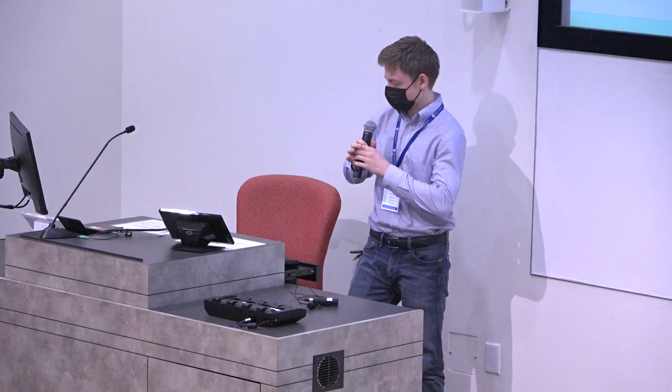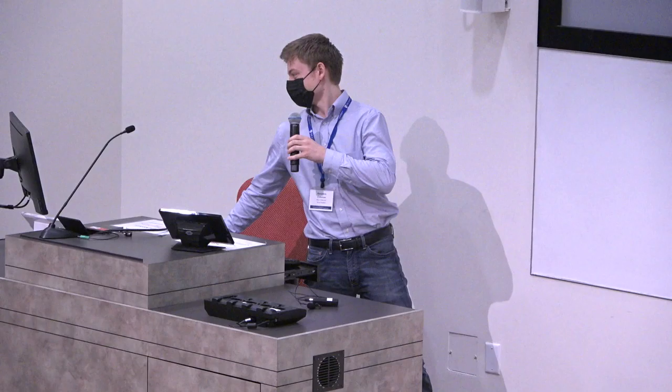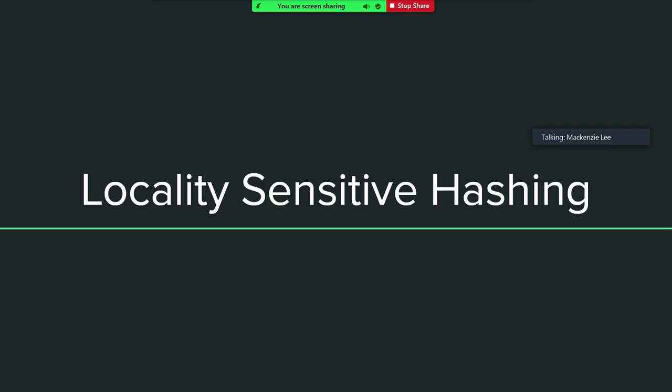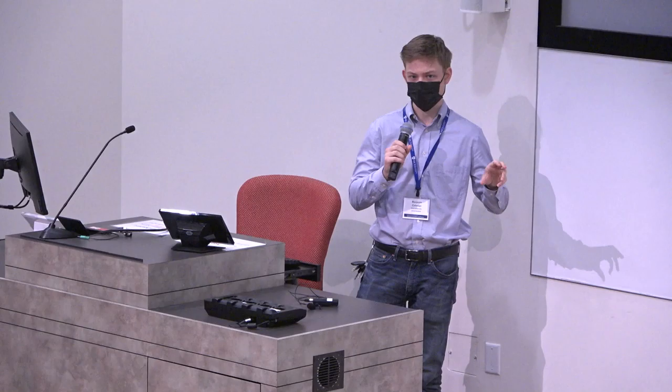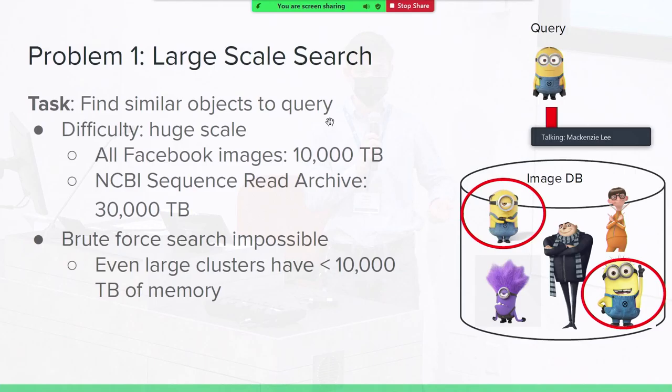My name is Ben, and I am going to talk about locality-sensitive hashing. What we just saw was an example of using hash functions to reduce the search space, and we saw that this got like a 20 to 50x speedup over just brute force search. But if we want to search with approximate matches instead of exact matches, we need to have a more clever kind of hash function. This clever kind of hash function is called a locality-sensitive hash function, and we're going to motivate this with a couple of important problems.